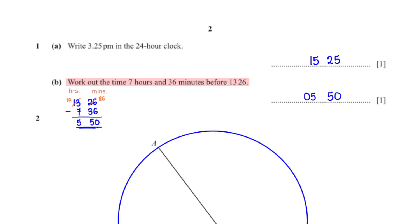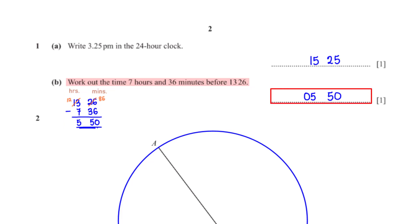Work out the time 7 hours and 36 minutes before 13:26. To get this time we simply subtract 7 hours 36 minutes from 13:26. Under the minute column we can't subtract 36 from 26, so we borrow one hour, giving 60 + 26 = 86 minutes. 86 minus 36 is 50, and 12 minus 7 is 5, so the time is 5:50.